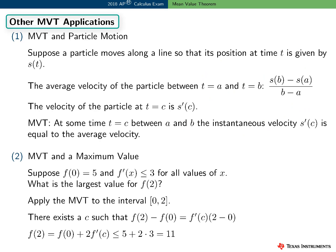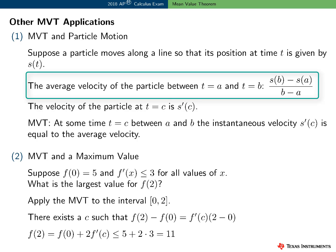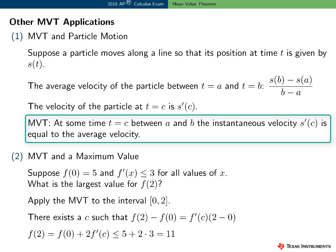Here are two applications of the mean value theorem. First, consider a particle motion problem. Suppose a particle moves along a line so that its position at time t is given by s of t. The average velocity of the particle between t equals a and t equals b is s of b minus s of a divided by b minus a. The velocity at time t equals c is s prime of c. So if the conditions of the MVT are satisfied, at some time t equals c between a and b, the instantaneous velocity s prime of c equals the average velocity.